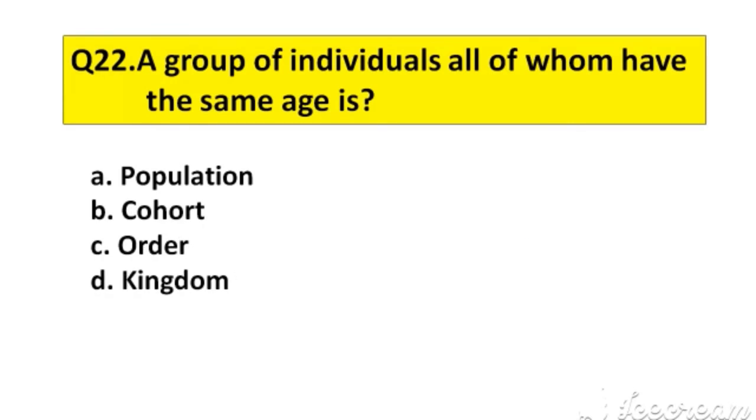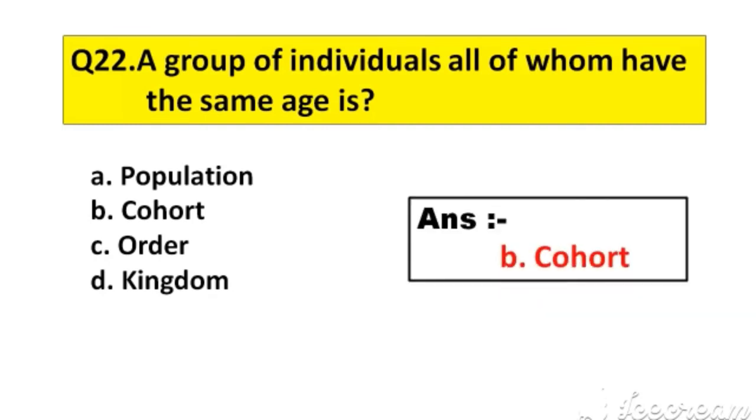Question number 22. A group of individuals all of whom have the same age is: A. Population, B. Cohort, C. Order, D. Kingdom. The right answer is option B, Cohort.